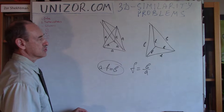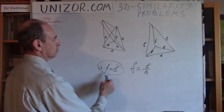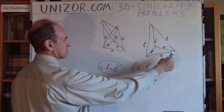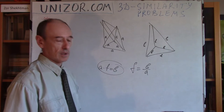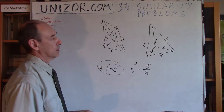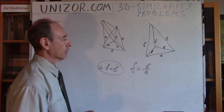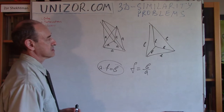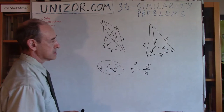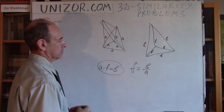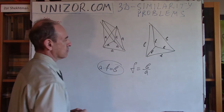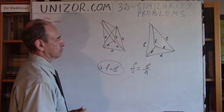Once you have two regular tetrahedrons with the same edge length, they can be transformed one on top of another — meaning they are congruent. The process is simple: first align a vertex, then adjust the base plane, then rotate within the base plane to have the triangles coincide, and that's the end of it.